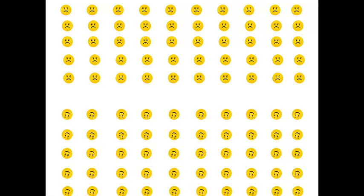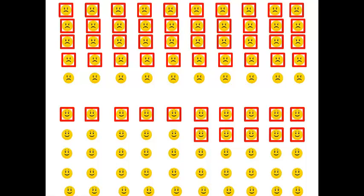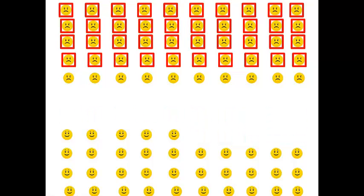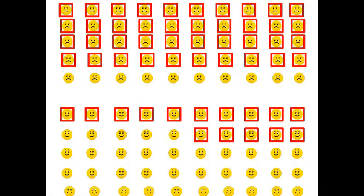Let's go back to our sample of 100 people, the same one we used for our sensitivity and specificity tutorial. In the sample, we have 50 people who have a disease on top, and 50 people who do not have a disease on the bottom. Just like last time, let's assume that 40 of the diseased group test positive, and 15 of the non-diseased group test positive as well.